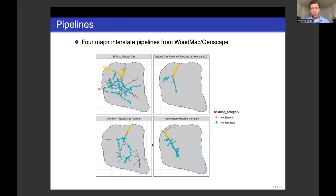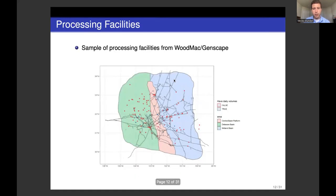Our pipeline data focuses on four major interstate pipelines from Woodmac and Genscape: El Paso Natural Gas, Natural Gas Pipeline of America, Northern Natural Gas, and TransWestern. The blue triangles are net receipt points where gas is being placed on the pipeline, which balance out with orange export points. We have matched about 27 natural gas processing plants in the Permian — shown as blue dots — to receipt points on the pipeline network. The red dots are plants we have yet to match. The shading delineates the different parts of the Permian Basin.